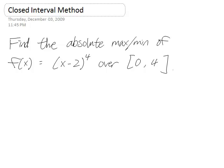We want to find the absolute maximum and minimum of this function, (x-2)^4, over the closed interval [0, 4].